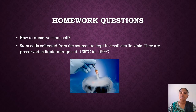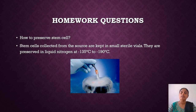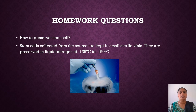Now let us see our homework questions. The first question is: how to preserve stem cells? The stem cell will first be extracted from the source. The extracted stem cells will be preserved or collected in small sterile vials, which are like miniature test tubes. These will be preserved in liquid nitrogen at minus 135 to minus 190 degrees Celsius, and can be preserved for more than 20–30 years and used when needed.